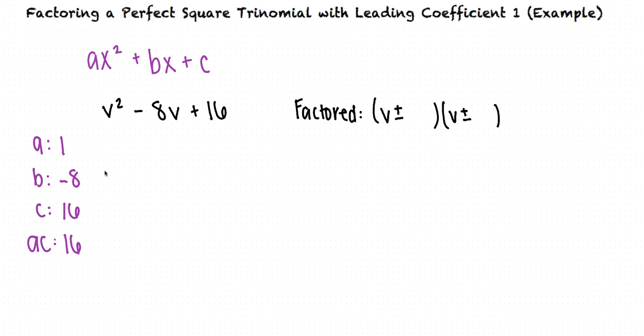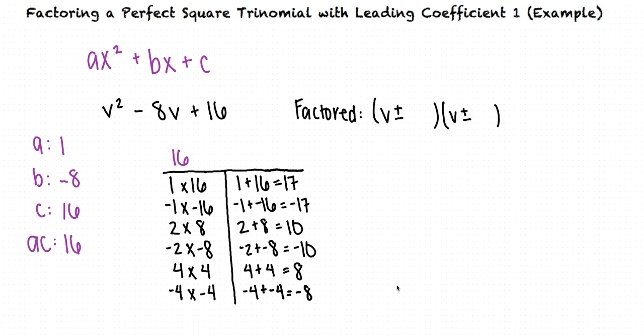We can first make a list of pairs of factors that multiply to 16. From this list, we can determine which pair of numbers will add to -8. It looks like -4 and -4 both multiply to 16 and add to -8. So these will be the numbers that we put in our factored form of the original polynomial.